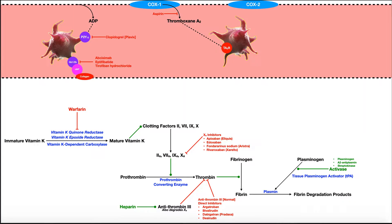Over the course of the next several videos, we're going to be talking extensively about cardiopulmonary pharmacology. One of the drugs that we're going to see is what's called warfarin, also called coumadin. Warfarin is used as a blood thinner. So if somebody is at risk for blood clots, which could potentially lead to stroke, they may be prescribed warfarin, which lowers the risk of heart attack and stroke by preventing blood from clotting.